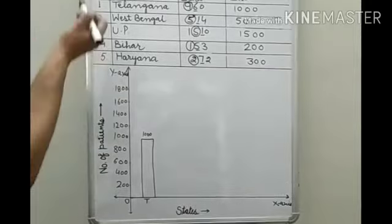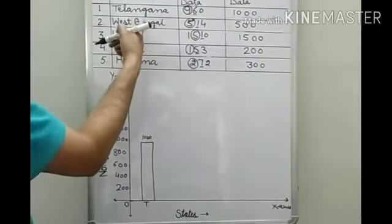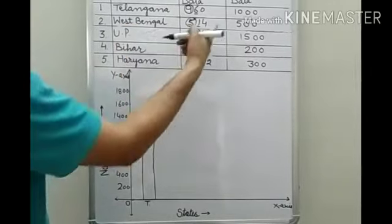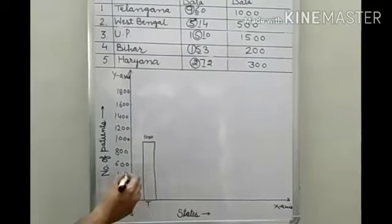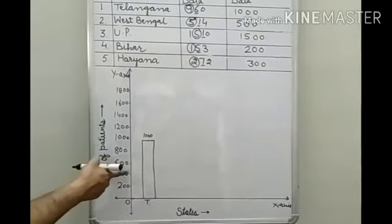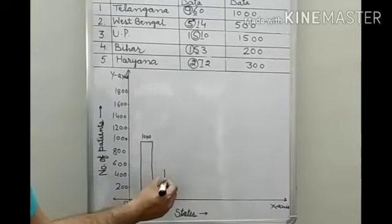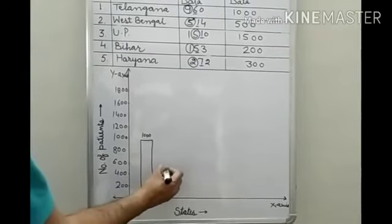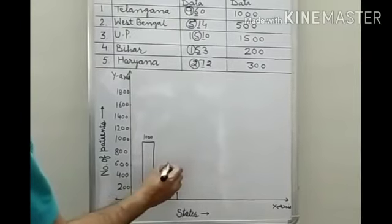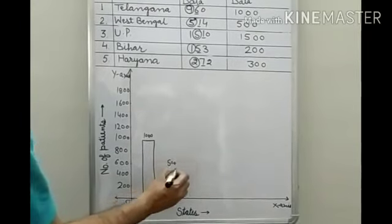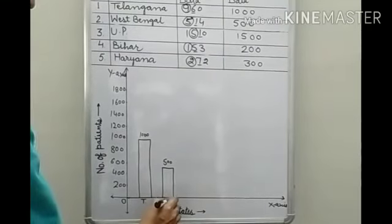In same way, you have to represent the others. Now next is for West Bengal. And corresponding to this state, how many patients are there? 500. So next is 500 will lie between 400 and 600. So between this. So this bar will represent number means 500 patient. And this bar is for West Bengal. W.